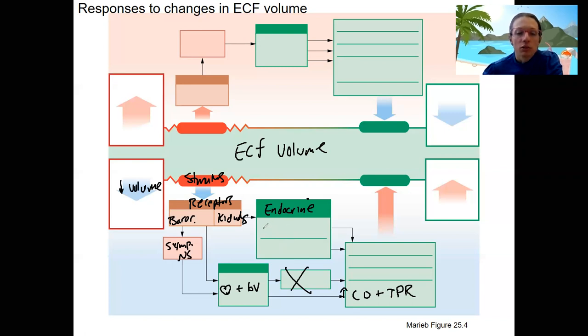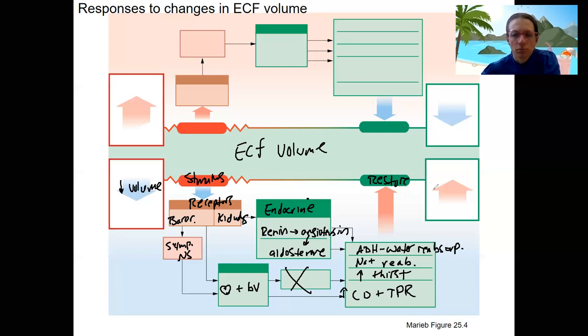Our kidneys are going to release renin to trigger angiotensin. That's going to have effects. We're going to have angiotensin affect ADH for water reabsorption. We're going to have angiotensin trigger aldosterone for sodium reabsorption and then water as well. Two different mechanisms. We're also having increased thirst.